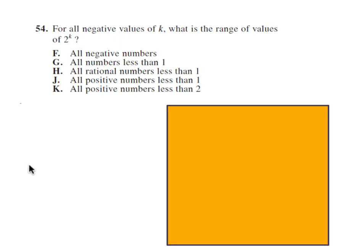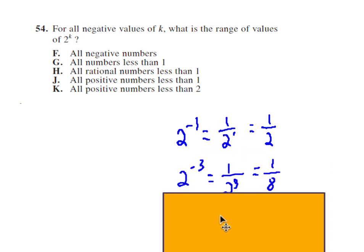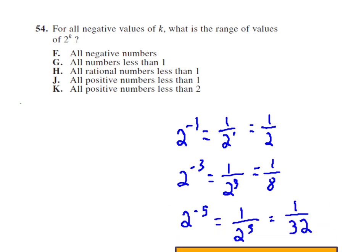Number 54. So we need to remember that when k is negative, when you have a negative exponent, for example, 2 to the negative 1, that means 1 over 2 to the 1, which is 1 half. 2 to the negative 3 will be 1 over 2 to the 3rd. And notice no matter what this negative exponent is, we're always going to get a fraction. And this fraction is always between 0 and 1. So that would mean the answer is J, all positive numbers less than 1.